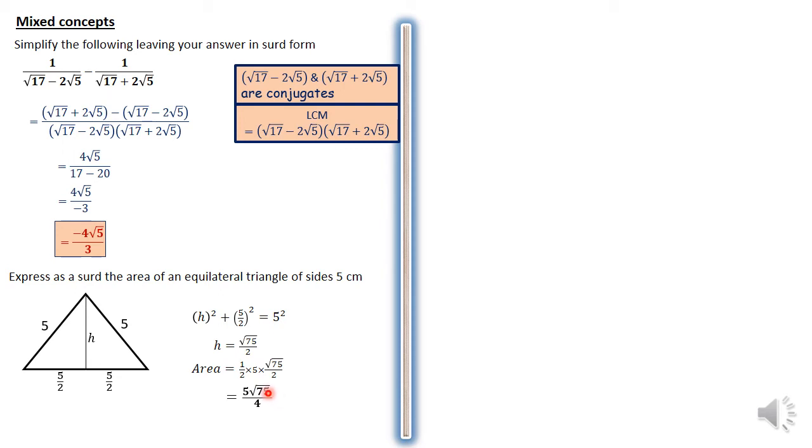Remember, root 75 can be simplified further by having root 75 equal to root 25 times 3, which is 5 root 3. And 5 is multiplied by this 5 to give us 25. So we have the answer as 25 root 3 over 4 cm squared. That's the answer for that second question there.